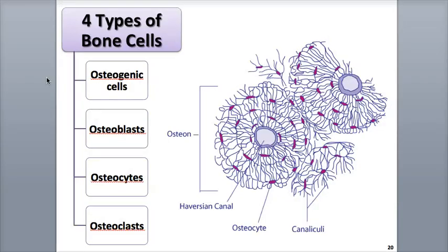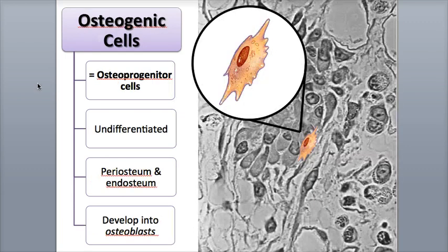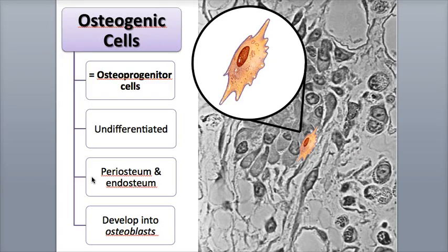There are four main types of cells found in bone tissue: osteogenic cells, osteoblasts, osteocytes, and osteoclasts. Osteogenic cells, also called osteoprogenitor cells, are connective tissue stem cells that are undifferentiated, which means they're unspecialized. They are produced from mesenchyme tissue, which is the source of most of the body's connective tissues. They're located primarily in the endosteum and the inner layer of the periosteum, and they're unique in that they're able to divide, while all other cells of bone tissue cannot.